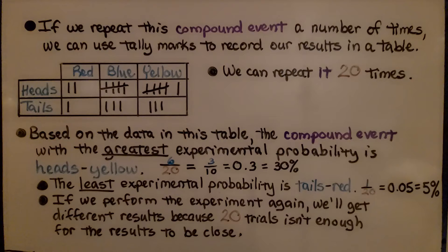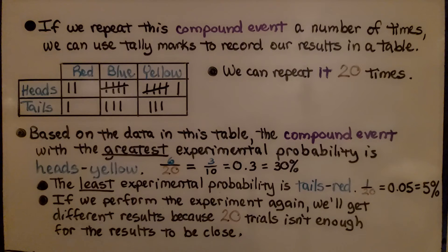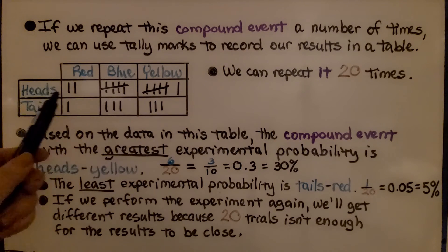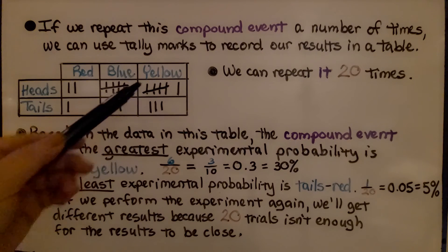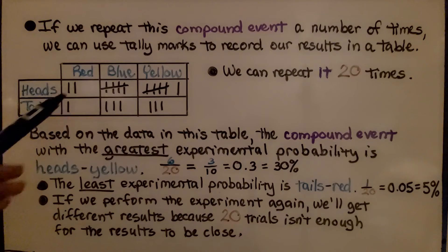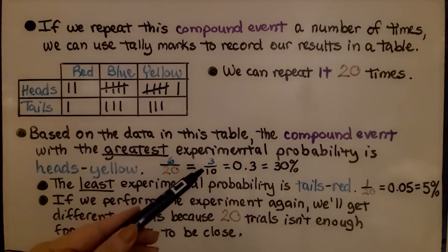If we repeat this compound event a number of times, we can use tally marks to record our results in a table. We can repeat it 20 times — that would be 20 trials. The coin gives heads or tails, and the spinner gives red, blue, or yellow. Based on the data in this table, the compound event with the greatest experimental probability is heads-yellow, with six tally marks out of 20. That's six-twentieths, which simplifies to three-tenths.